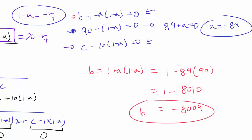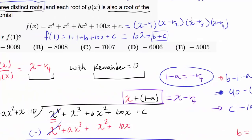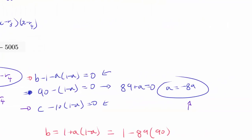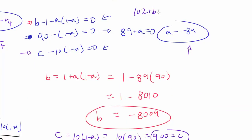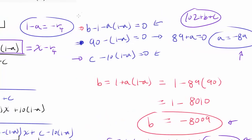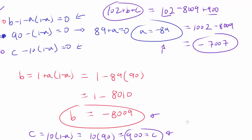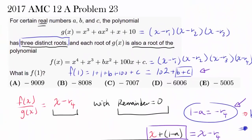From C − 10(1 − A) = 0, we get C = 10(1 − A) = 10(90) = 900. Now we have everything we need. F(1) = 102 + B + C = 102 + (−8009) + 900 = 1002 − 8009 = −7007. So the final answer is −7007, which is answer choice C.